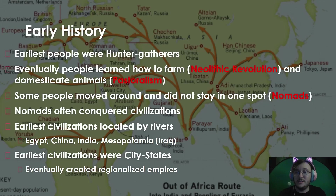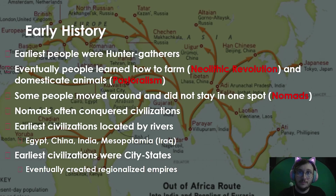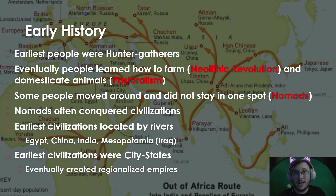Let's start with some early history. The earliest people were hunter-gatherers — people who would follow and hunt animals and use those animals for their everyday needs: clothing, shelter, tools. They would also gather berries, seeds, undomesticated fruits, and nuts. Gatherers were primarily women, while hunters were primarily male. During this Paleolithic time, people began to learn how to farm in what is known as the Neolithic Revolution.